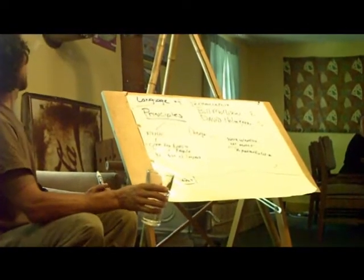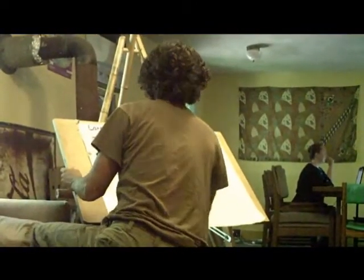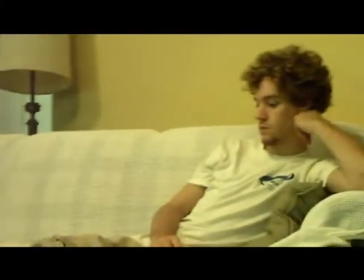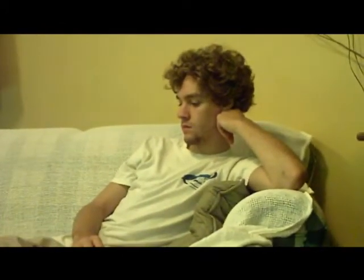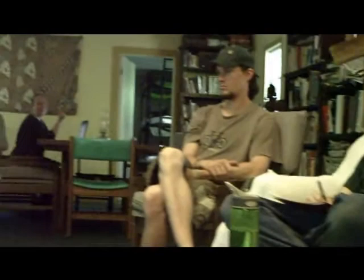Now here are David Holmgren's principles. Observe and interact. Catch and store energy. Obtain a yield. Apply self-regulation and accept feedback.